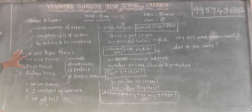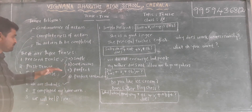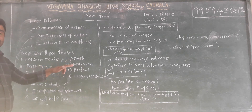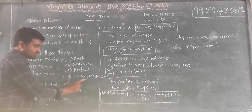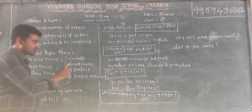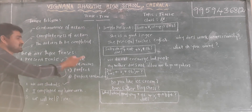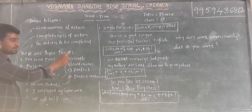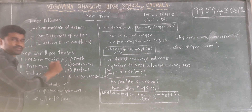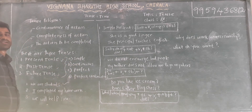Now, after knowing the three basic tenses, these three basic tenses have got four sub-tenses each: simple, continuous, perfect, and perfect continuous. If you take present, it becomes simple present, present continuous, present perfect, and present perfect continuous. If you take past, it becomes simple past, past continuous, past perfect, and past perfect continuous. If you take future, it becomes simple future, future continuous, future perfect, and future perfect continuous tense.